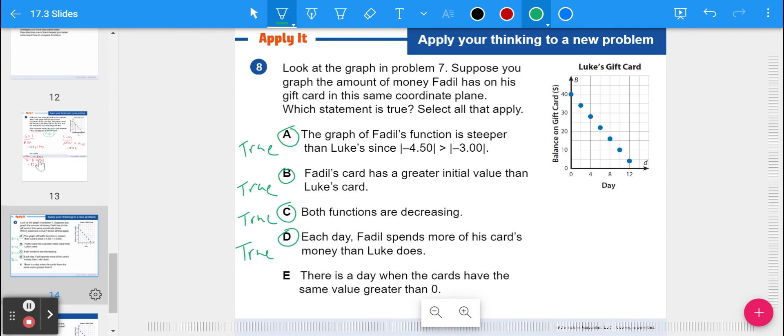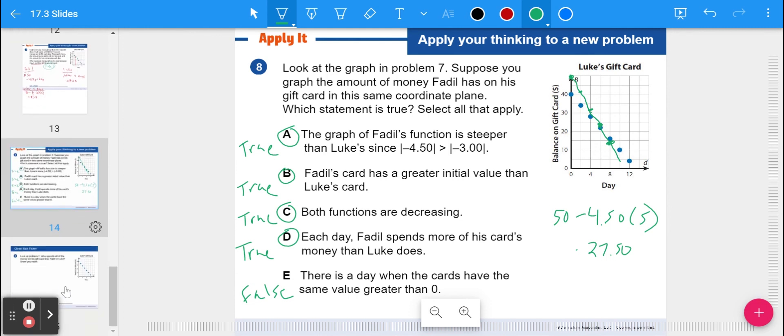It's going down faster. There's a day when the cards have the same value greater than zero. That's something we'd have to look at. It was close, like the 32 and the 28. But let's say we did after five days. So let's do 50 minus 450 times five, which gets me 22.50. So I would be at 27.50. And after five days, Luke will be down to 25. I actually just started graphing it because it goes down $9 every two days. It actually will never cross on the same day at the same amount. So it crosses over at about that seven-day mark, but it will not.